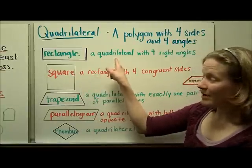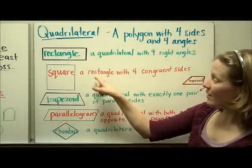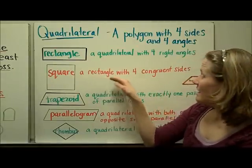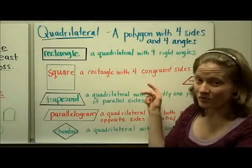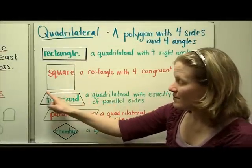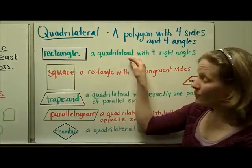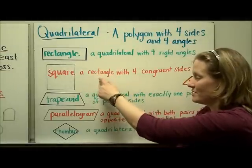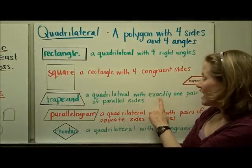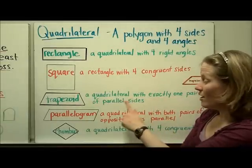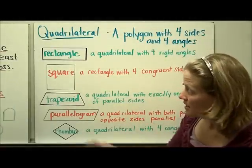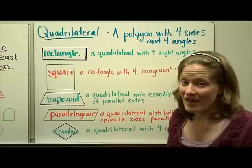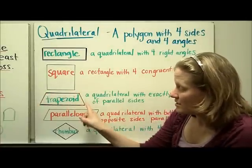A square is a rectangle by definition. A square is a quadrilateral with four right angles, but in addition to that, it has four congruent sides. If you measured one side, it would be the same as each of the other sides. A trapezoid is different — it is still a quadrilateral, but it has exactly one pair of parallel sides. The top and the bottom of a trapezoid are parallel, meaning they would go on forever without intersecting, while the other two sides are not parallel.